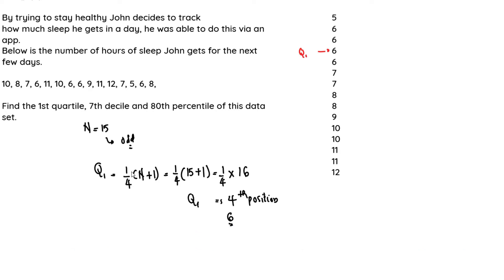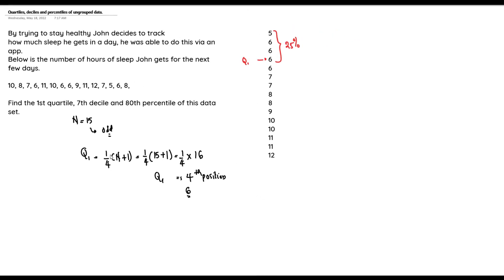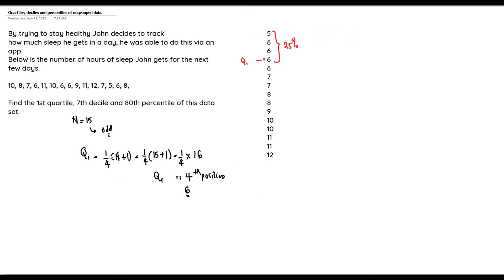From this point of five down to this point, this is the first 25% — the first quarter. If we were to divide our distribution into four parts, from five down to six represents the first quarter, which is the first 25%.